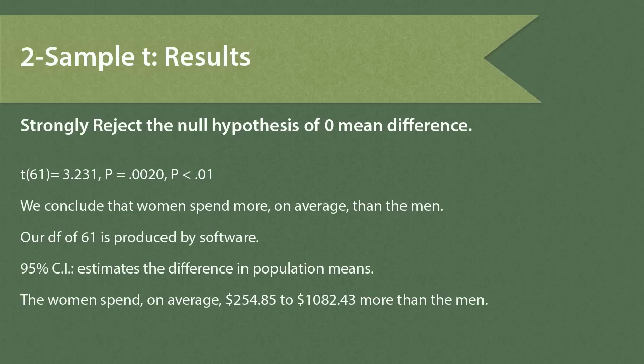We conclude, therefore, that the women spend more on average than the men. Our degrees of freedom of 61 is obtained by our software and uses what's called the Satterthwaite approximation. Our 95% confidence interval is an estimate of the population mean difference. We can see that the women spend, on average, somewhere between $254.85 up to $1,082.43 more than the men.